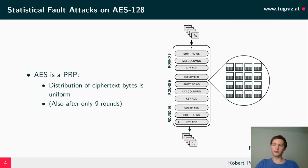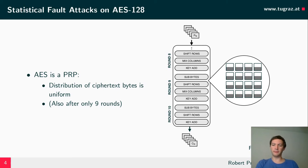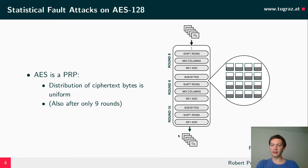Before we talk about countermeasures, I would first like to explain how these attacks actually work, starting with statistical fault attacks, which were first proposed by Fu et al. in 2013. These attacks essentially exploit the fact that AES is a pseudorandom permutation, which means that if you encrypt a set of different plaintexts and look at one byte position of all the ciphertexts, the distribution of that byte should be uniform. This is also the case for specific state bytes in round 9, which is more interesting for our attack.